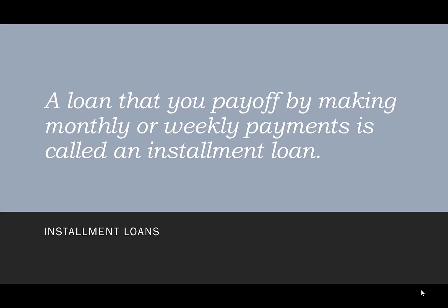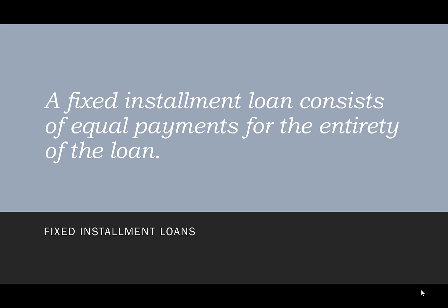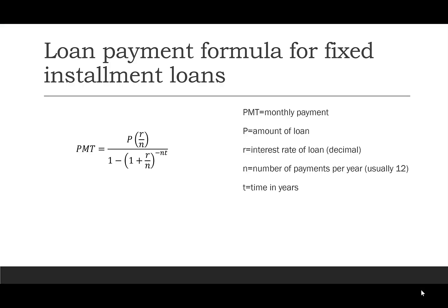A loan that you pay off by making monthly or weekly payments is called an installment loan. A fixed installment loan consists of equal payments for the entirety of the loan. The loan payment formula is: PMT = P × (R/N) divided by 1 minus (1 + R/N) to the negative NT.